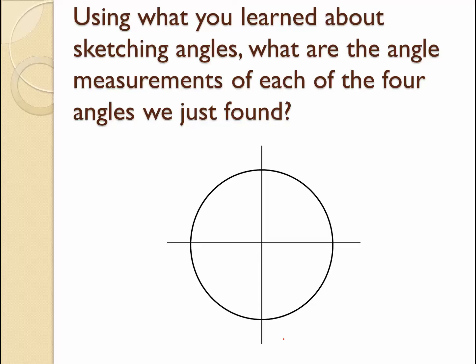Using what we've learned about sketching angles and special right triangles, the four angle measurements are: this angle right here is 0° or 360° if we go all the way around; this one is 90°; this one is 180°; and this one is 270°. In radians, that's 0 or 2π, then π/2, then π, and then 3π/2. Make sure you find the spot on your white unit circle and record this information.